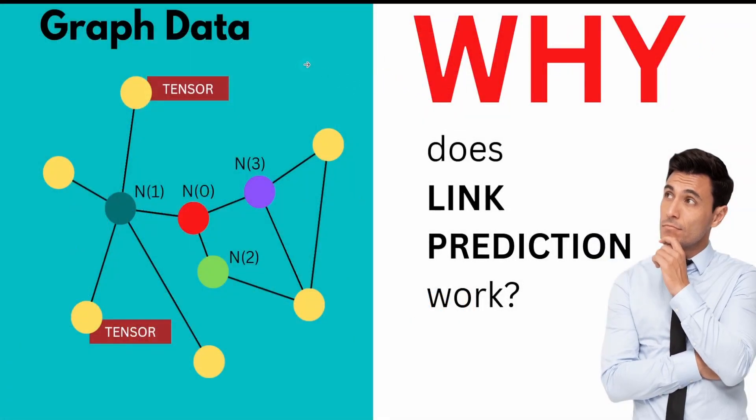We have a graph data set with many nodes that have node feature tensors, and edges with edge feature tensors. The structural information of the graph is mathematically represented in the adjacency matrix, and now we ask ourselves why does link prediction work on this data?